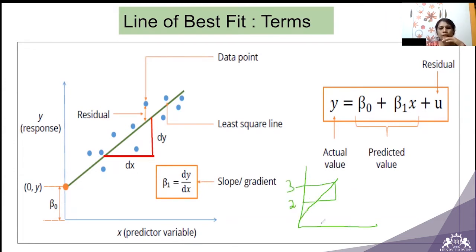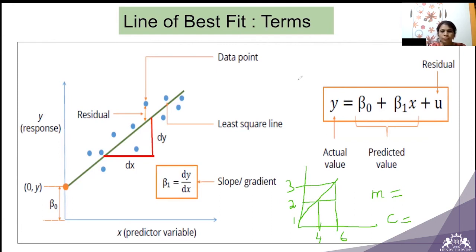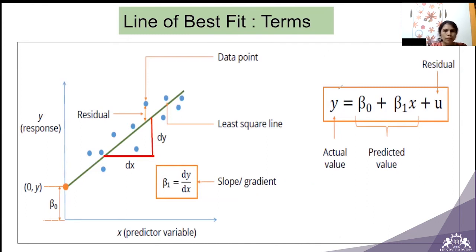Here's a quick example: if the line passes through points where x equals 4 and x equals 6, what are m and c? M is dy by dx, which is (3 minus 2) divided by (6 minus 4), giving 1 over 2, which equals 0.5. And c — where does it intersect the y-axis? That is 1. So that is how m and c are calculated.